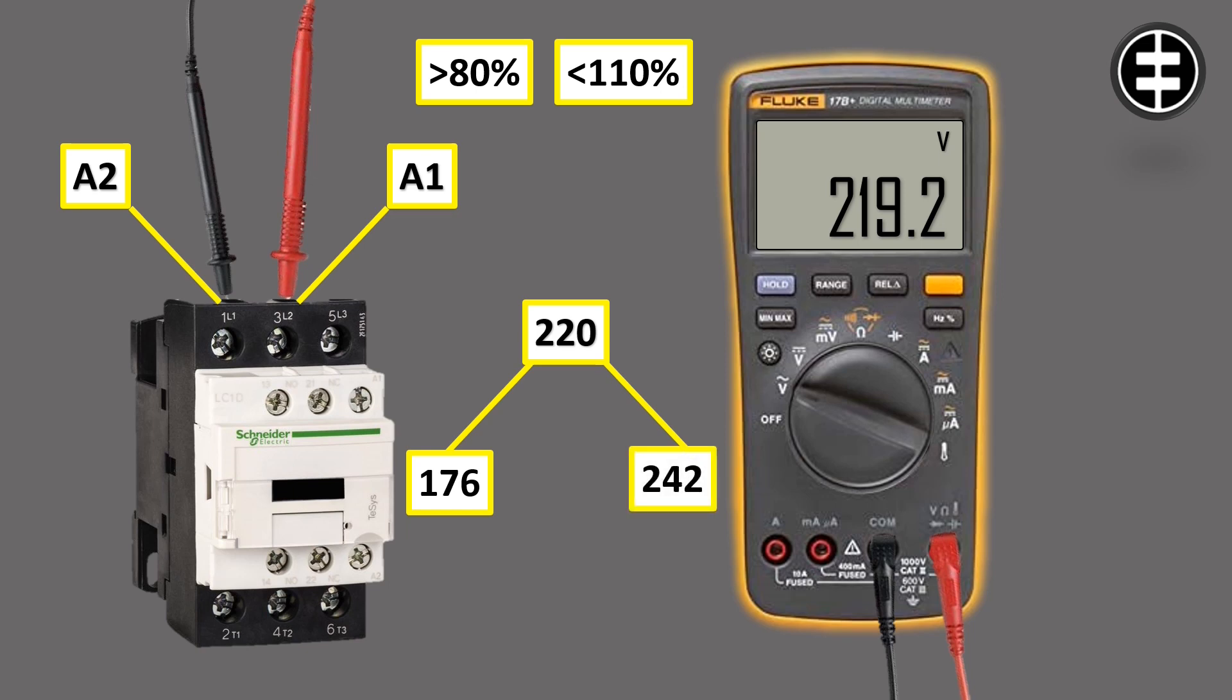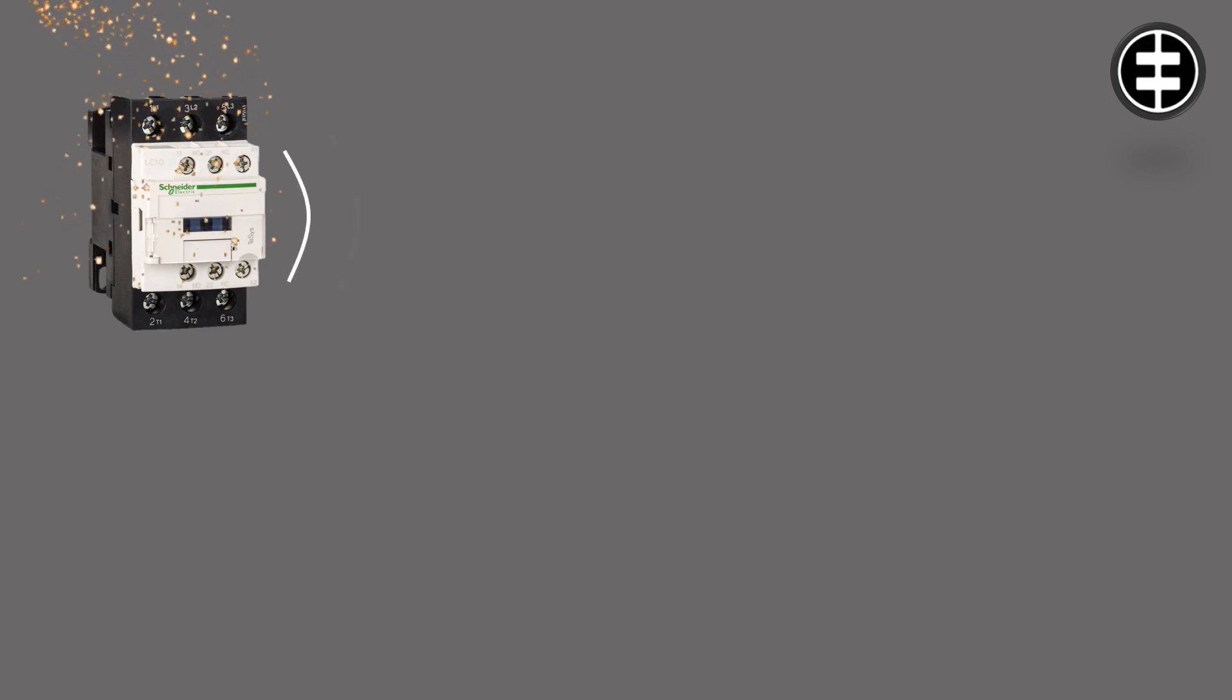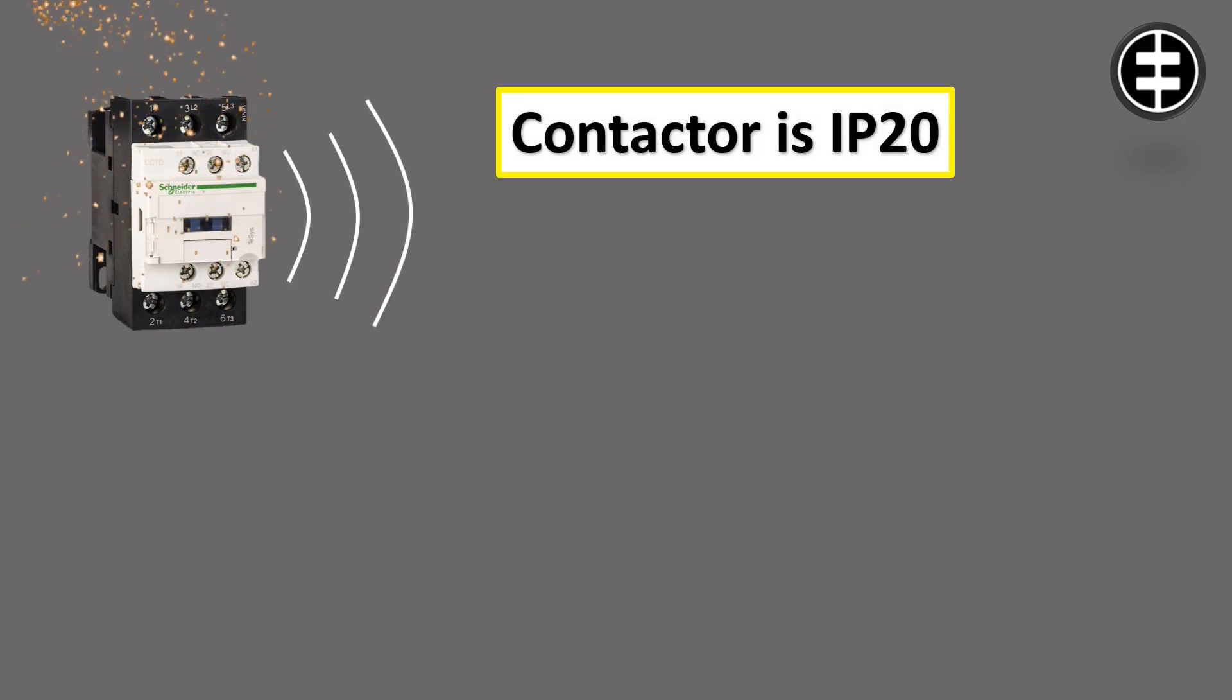Contactors, if used in a dusty environment, are at risk of dust deposition on the core and armature. Dust can also generate noise during contactor power-up time. The contactors' IP rating is normally 20, which protects from objects bigger than 12.5 millimeters, but dust particles are smaller than 1 millimeter.